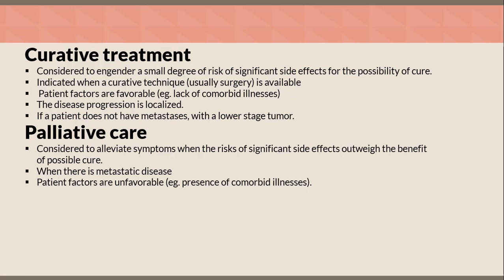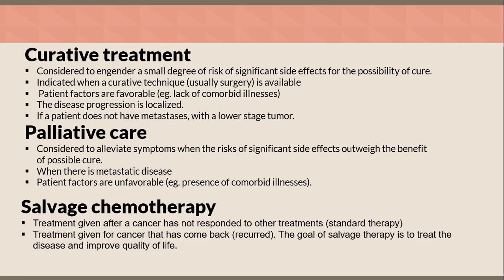The second topic is palliative care. It is considered to alleviate symptoms when the risks of significant side effects outweigh the benefit of possible cure, when there is metastatic disease, and patient factors are unfavorable, for example, presence of comorbid illnesses. The first subtype is salvage chemotherapy — treatment given after a cancer has not responded to standard therapy, or for cancer that has recurred. The goal of salvage therapy is to treat the disease and improve quality of life.